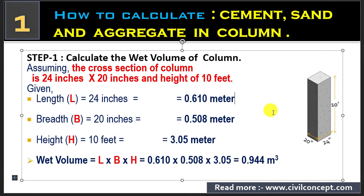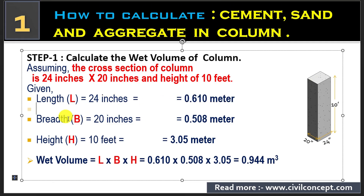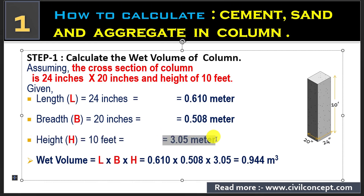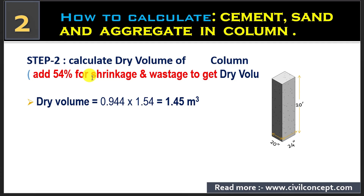You can see here the height of this column is 10 feet — you can change it according to your requirement. The length of the column is 24 inch, which is 0.610 meter. The breadth of the pillar is 0.508 meter, and the height is 10 feet, which is 3.05 meter. To calculate the volume of the column, we multiply length into width into height, and after putting all these values we get 0.944 meter cube. This is the wet volume of the column.